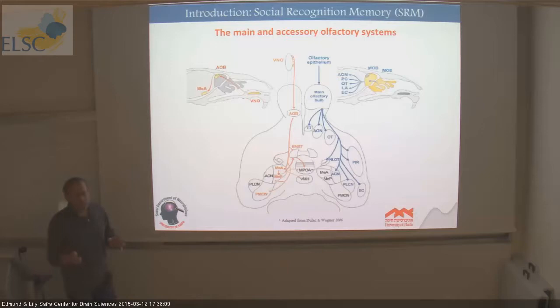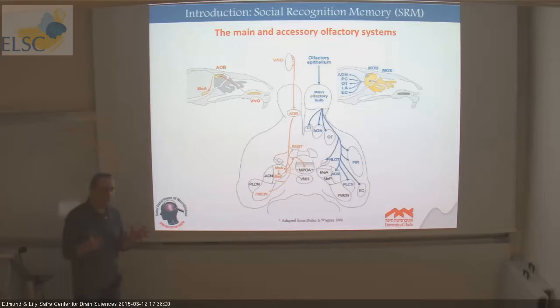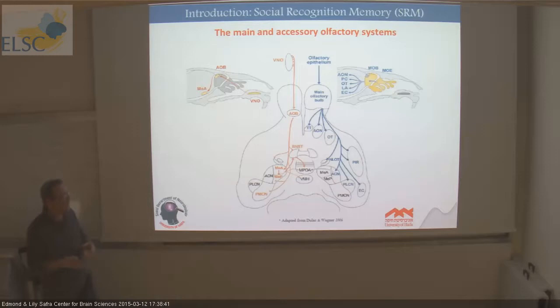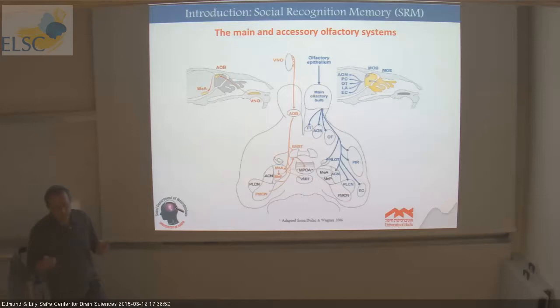Animals are endowed with specific, dedicated sensory channels and processes dealing with social information, because social information is very important and very predictable. Nature knows that an animal is going to sometime meet a conspecific. In humans, it's face processing or detection. In birds, it's song recognition. In rodents, it's mainly the vomeronasal system.